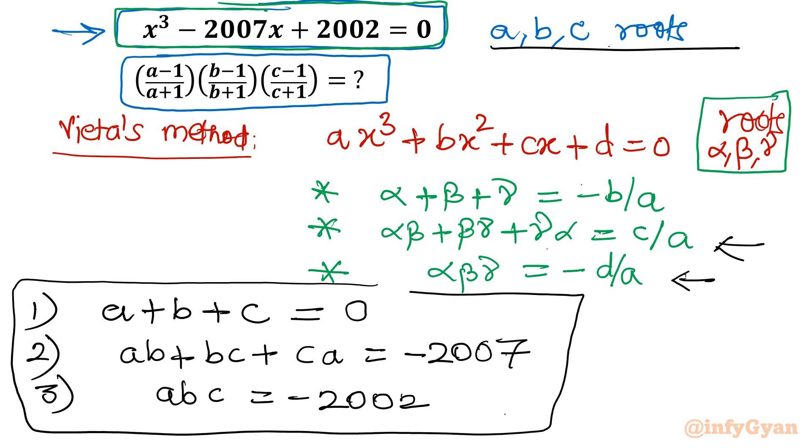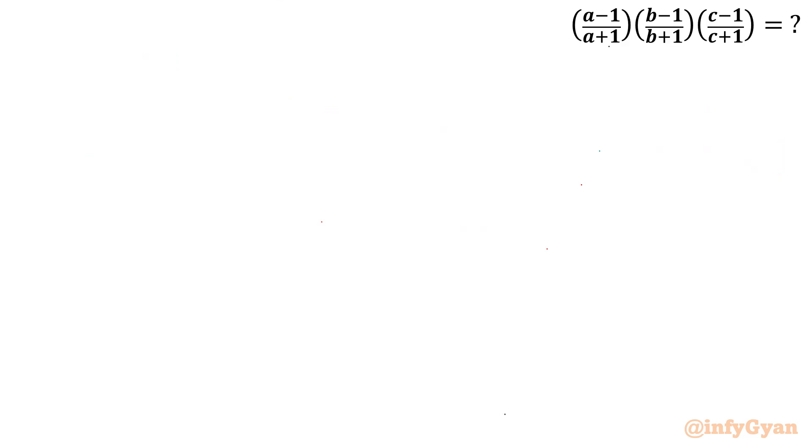So let me evaluate the given expression. What I am going to do is evaluate the numerator and denominator separately. (a-1)(b-1)(c-1) and (a+1)(b+1)(c+1). Let's find out the simplification result.